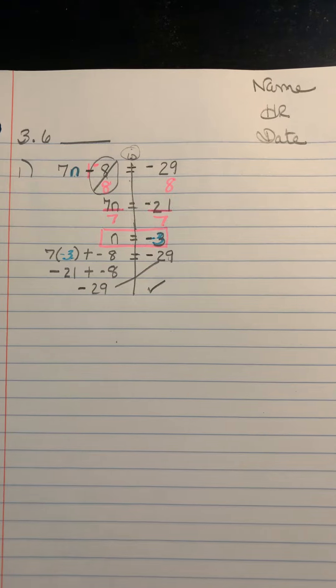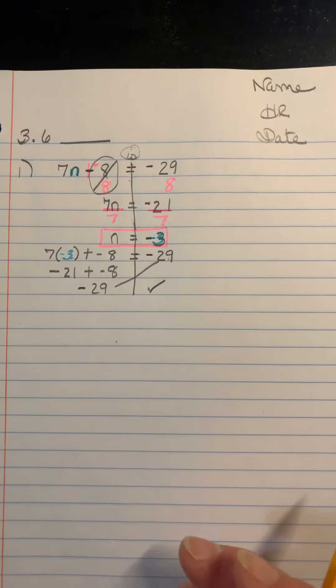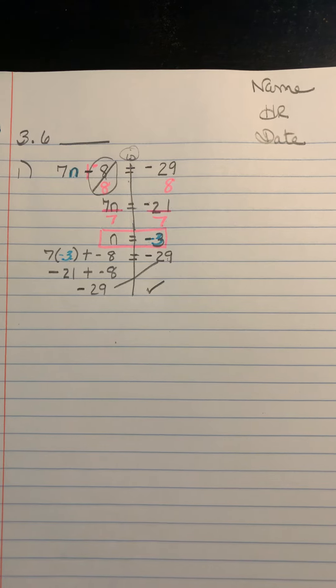So that's all that 3.6 is about - translating and then solving. So good luck with that. Keep going. Skip a line. Show your process for every single problem, including your, and especially your story problems. Good luck in 3.6.